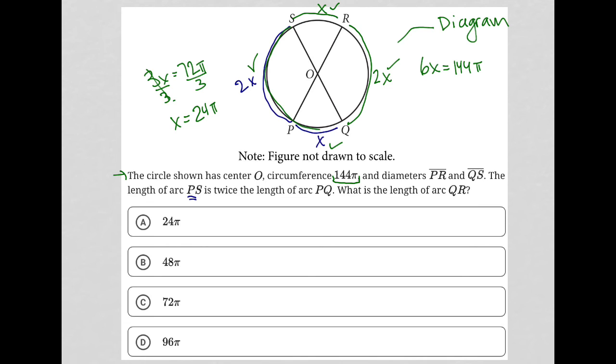Now, the question wanted to know arc QR. QR is 2X, which means it should be 48π. So my answer is 48π. So be careful about choosing 24π, because 24π is something that we get in this question, it's just not what the question is actually asking for. And hopefully that makes sense, right? So this is 24π, this is also 24π, but these here are 48π. And if you do the math, you'll see that all of them add up to 144, as the question told us they would.